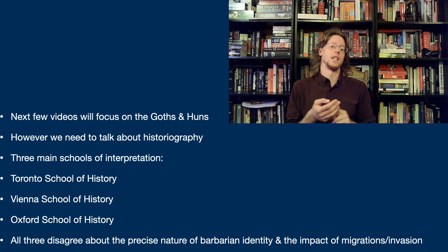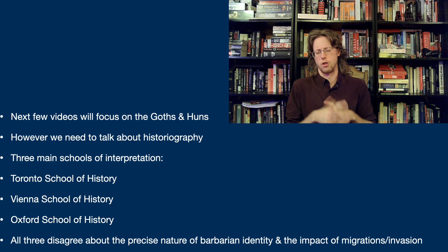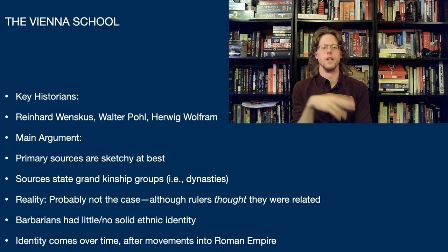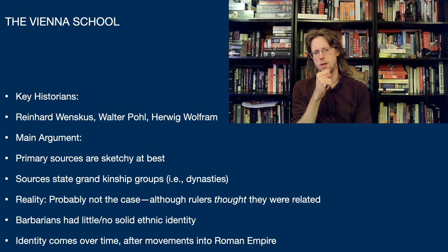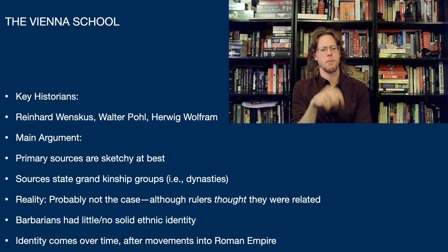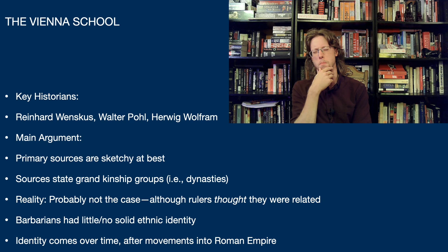All three disagree about the precise nature of barbarian identity, the impact of the migrations and invasions, and the impact that had on the Roman Empire. The Vienna School's key historians — Wenskius, Paul, and Wolfram — make a main argument around the concept of the Interpretatio Romana, the Roman interpretation. A lot of the primary sources were written with this framework in mind.